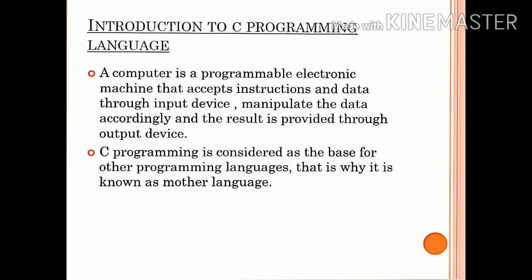Going into the Introduction to C Programming Language: a computer is a programmable electronic machine that accepts instructions and data through an input device, and then manipulates the data accordingly, with the result provided through an output device.